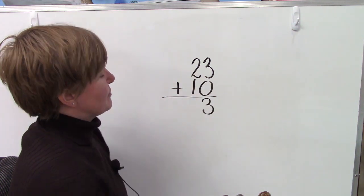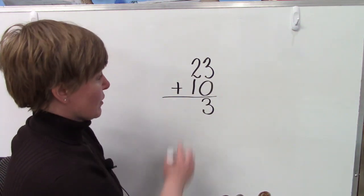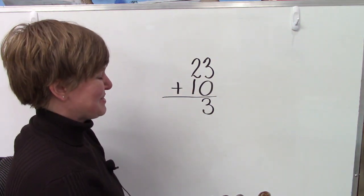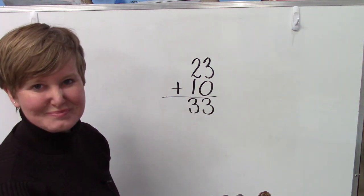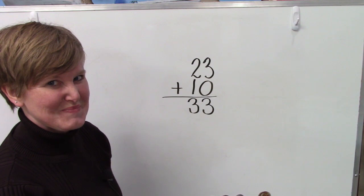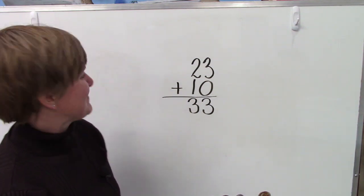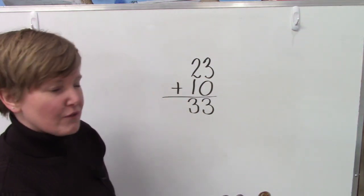Then we're going to look at the numbers in our tens place. We have 2 and 1. 2 plus 1 is 3. Did you already know that? I bet you that you did.